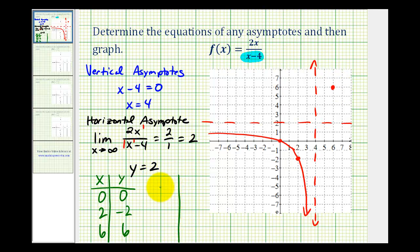If x is equal to eight, we'd have 16 in the numerator and four in the denominator. 16 divided by four is equal to four. So the point eight, four is on the function, which would be right here.